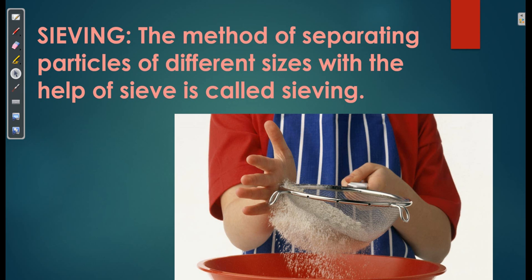Imagine if the impurities and the wheat flour both have the same size — they will both pass through the holes of the sieve, so our purpose of separating them will not be fulfilled. It is very important that the thing we want to separate from a mixture should have a different size — either bigger or smaller. Only then can we separate the mixture.